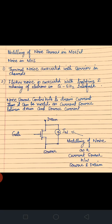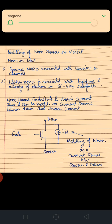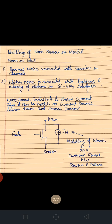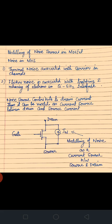Noise contributes to the drain current. The drain current ID is the output for the MOSFET, so the noise is attributed to the drain current. Thus it can be modeled as a current source IN between the drain and the source. We have modeled a MOSFET depicting noise in the form of a current source, with the three terminals — gate, source, and drain — depicted.